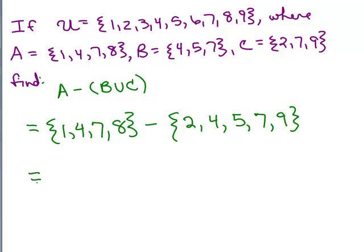Now I want to take away from the set one, four, seven, eight, anything that's in B union C. So I don't have to take the one out because it's not over here. The four I have to take out because it's over here, and the seven I have to take out because I see it over here and the eight I do not. So what's left in A is one and eight, so that's our answer.